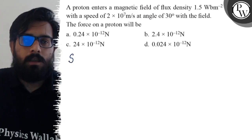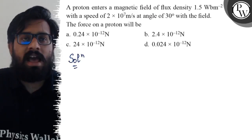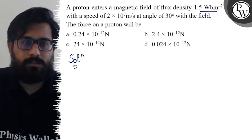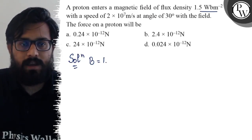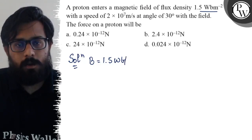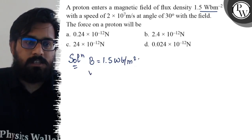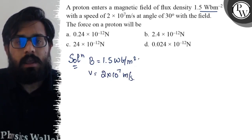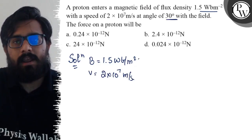So in this question, you have a proton which enters a magnetic field of flux density 1.5. Given values: B = 1.5 Weber per meter squared, speed is 2 × 10^7 m/s, and the charged particle is making an angle of 30° with the field.